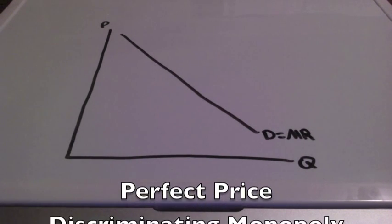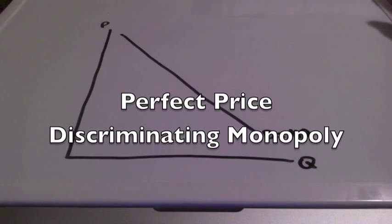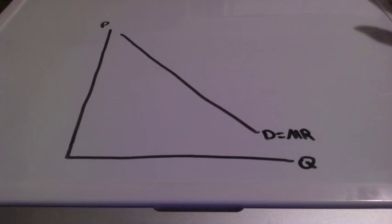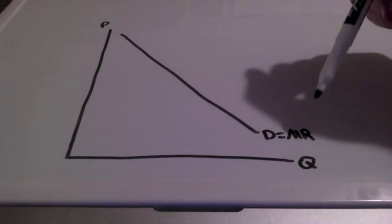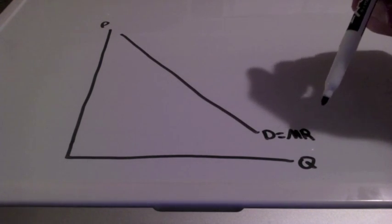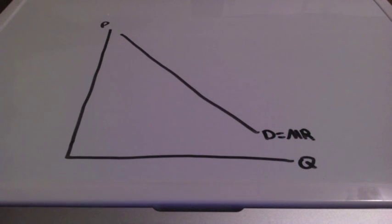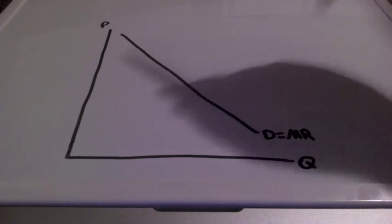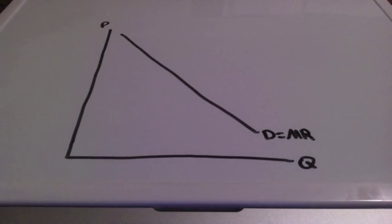We're going to take a look at a perfect price discriminating monopoly. The first thing you will notice is that our demand curve equals marginal revenue. This firm is willing to charge multiple prices in order to earn more revenue, and they're converting consumer surplus into profit.